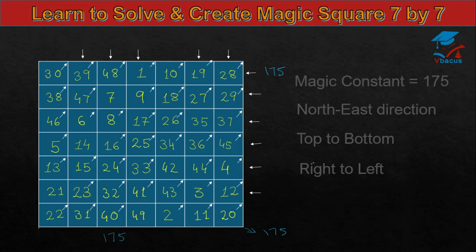So I have filled all the numbers from 1 to 49 in the magic square in such a way that the sum of vertically, diagonally, horizontally, adds up to 175.